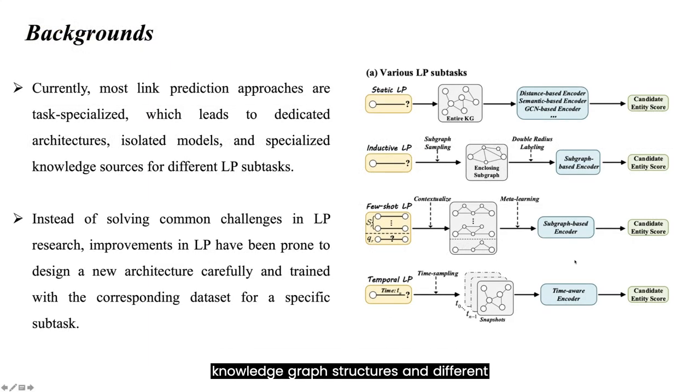Due to the variety of knowledge graph structures and different downstream task objectives, link prediction derives a plethora of subtasks, including static link prediction, inductive link prediction, few-shot link prediction, and temporal link prediction.